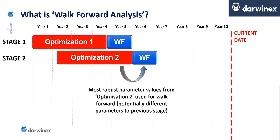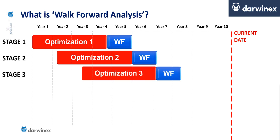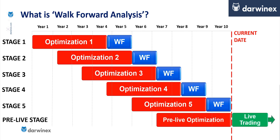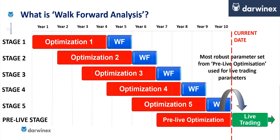This process of multiple stages then gets repeated again and again, with each optimisation identifying the optimal parameter values for whatever the market is doing at that time. The final optimisation, which takes us right up to the current date, is sometimes called a pre-live optimisation. Here these values are used to produce the parameter values that we will use in a live trading context.